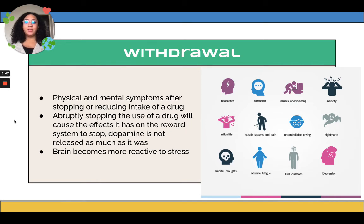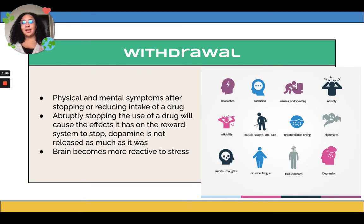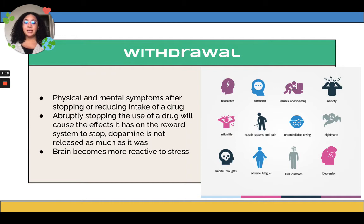Then there's withdrawal. When you have an addiction or tolerance and want to stop using, it causes physical and mental symptoms from stopping or reducing the drug. Abruptly stopping will cause the reward system effects to cease, so dopamine is not as present. The brain becomes more reactive to stress, and symptoms may include headaches, confusion, depression, and fatigue.